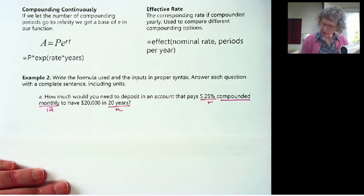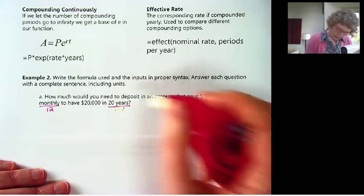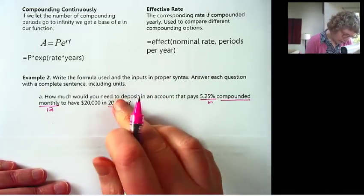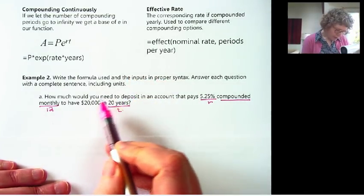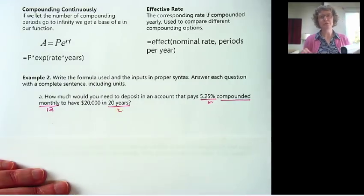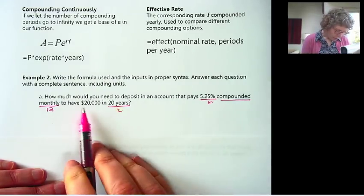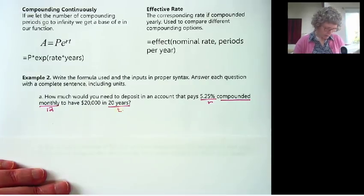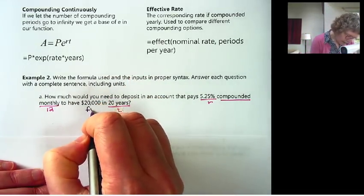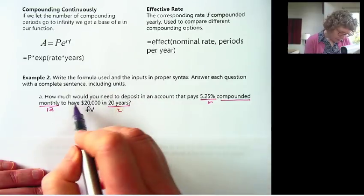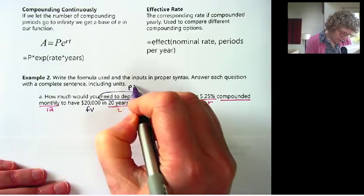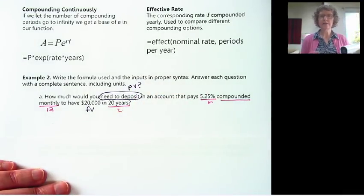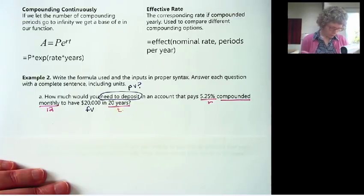Now we've got these two numbers. We've got present value and future value. So we need to figure out which is which. We want to have 20,000 in 20 years. So this is our future value. So how much would you need to deposit? We don't know our present value. So this is actually a scenario where we're going to use the present value formula. We haven't used it yet, so we're going to use it now.